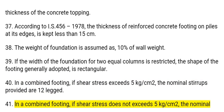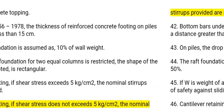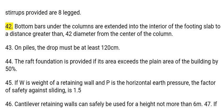41. In a combined footing, if shear stress does not exceed 5 kg per square cm, the nominal stirrups provided are 8-legged. 42. Bottom bars under the columns are extended into the interior of the footing slab to a distance greater than 42 cm from the centre of the column.